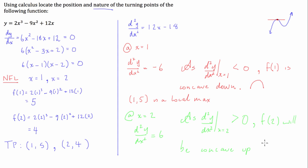f of 2 will be concave up. And what that looks like is this. And then we can finish this off, finalize it. We can say that (2, 4) is a local minimum.